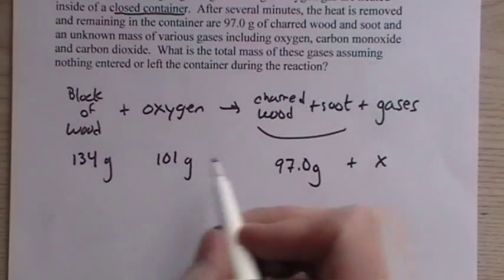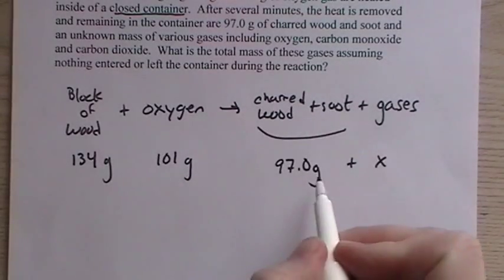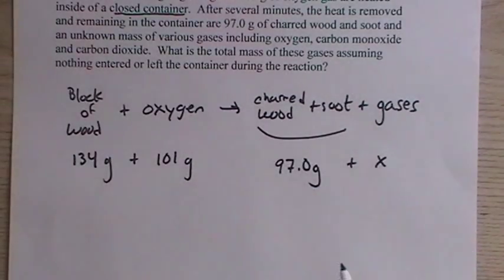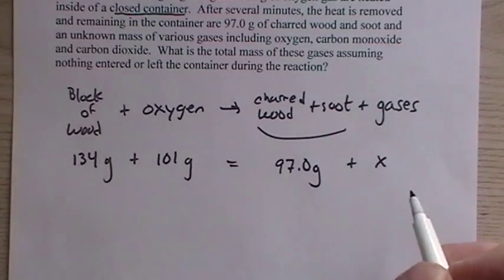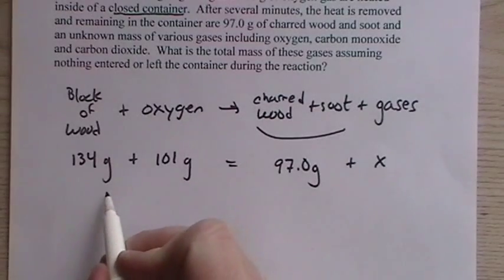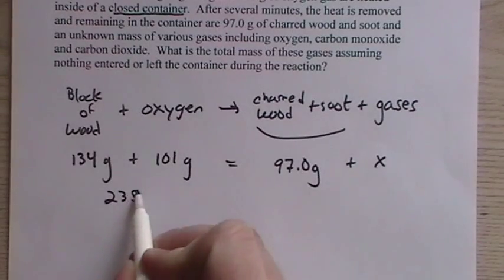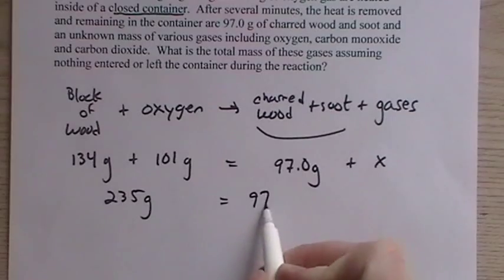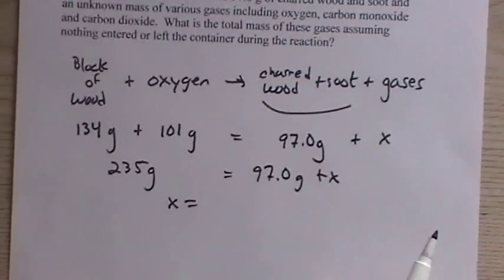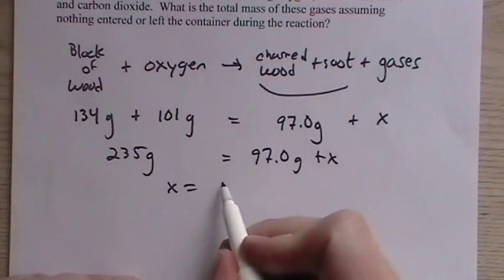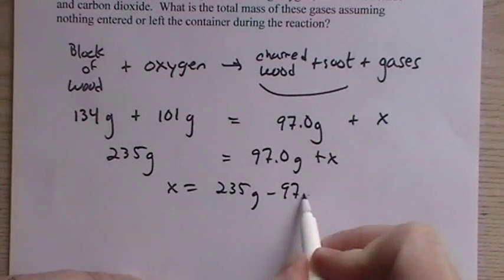Now, the mass of the reactants have to equal the mass of the product. So, 134 plus 101 must equal 97 plus x. And then it's a matter of solving for x. So on this side it would be 235 grams, 97 grams plus x. So x is 235 grams minus 97 grams.